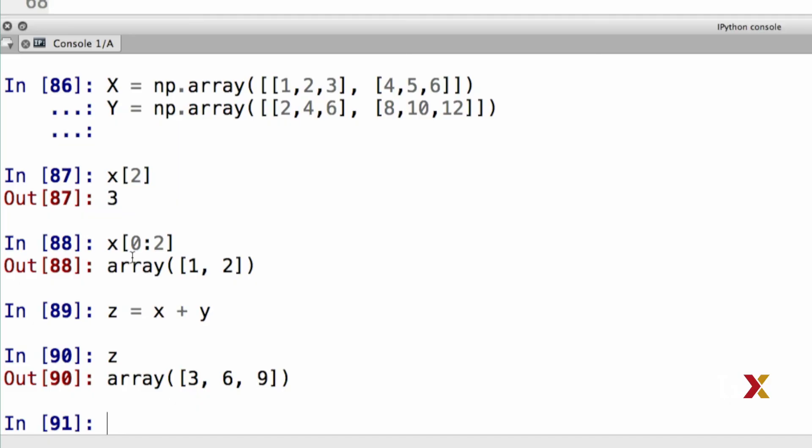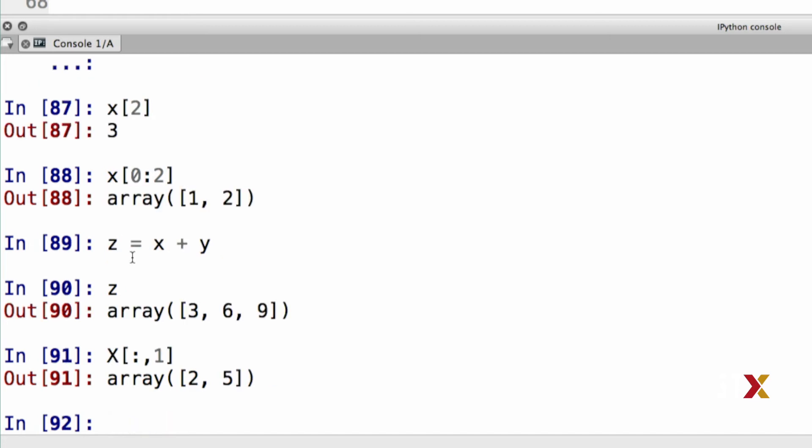Now, moving on to two-dimensional arrays, we can also investigate individual rows or columns of arrays. Typing x square bracket colon comma 1 gives me access to the first column of table x.